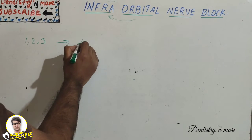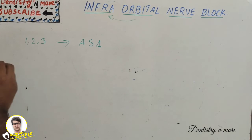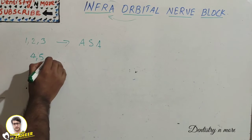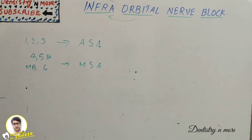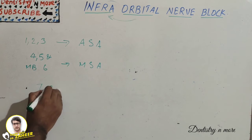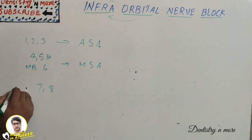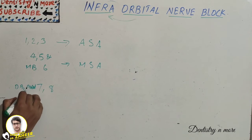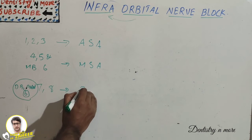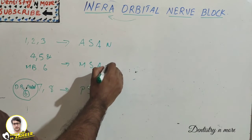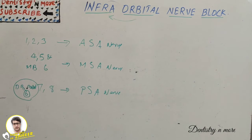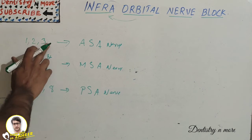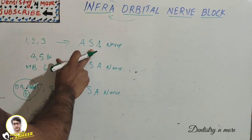The premolars — teeth 4 and 5 — and the mesiobuccal root of tooth 6 are supplied by the middle superior alveolar nerve. The other molars, teeth 7 and 8 (second molar and third molar), along with the distobuccal and palatal roots of tooth 6 (the first molar), are supplied by the posterior superior alveolar nerve. So the central, lateral incisor, and canine are supplied by the anterior superior alveolar nerve.